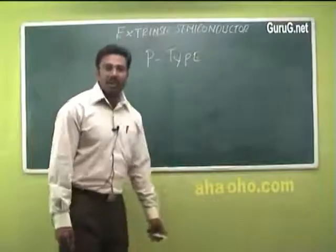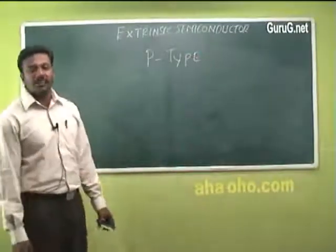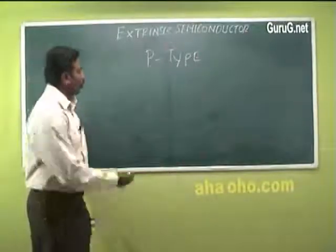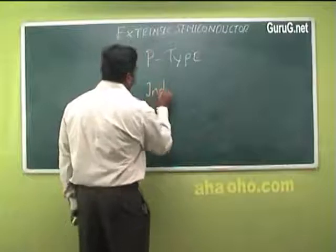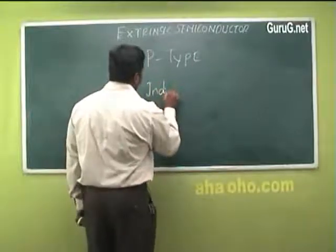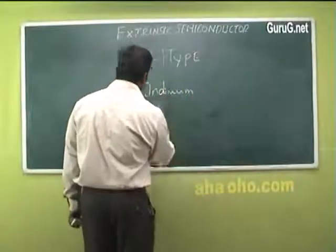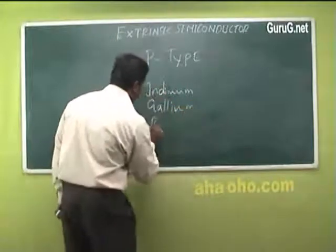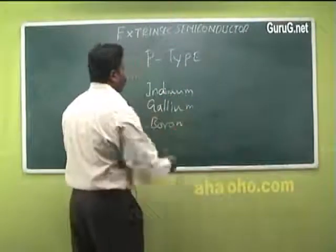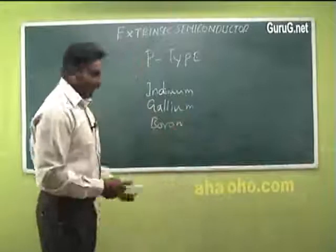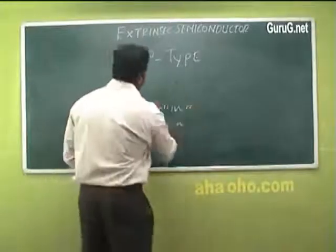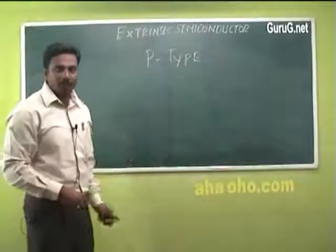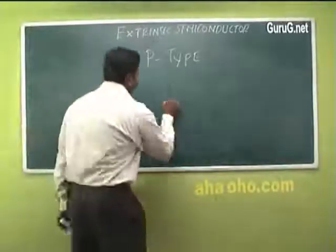In p-type semiconductors, a pure intrinsic semiconductor is doped with a trivalent element such as indium, gallium, boron, etc. For example, let us consider indium.